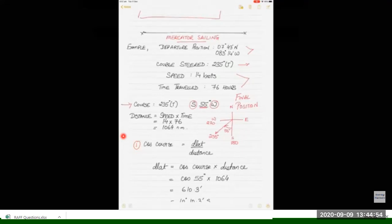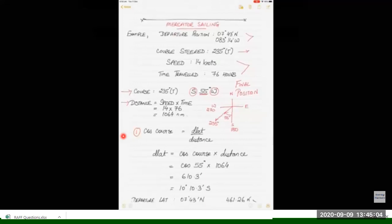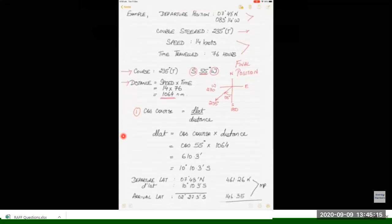Now we need d lat. We know cos course equals d lat upon distance. We have the course and distance, so we calculate d lat: cos 55 into 1064. Converting into degrees, it's 10 degrees 10.3 minutes. That is our new latitude.